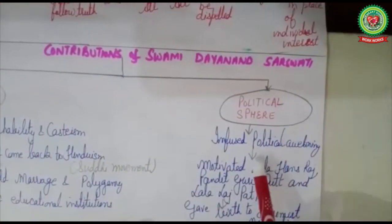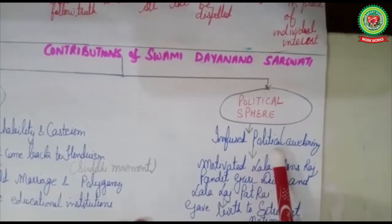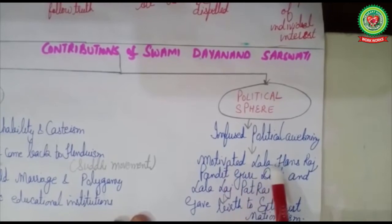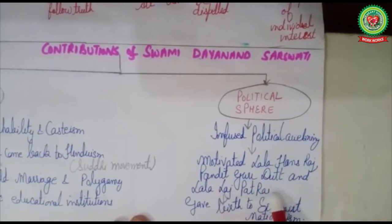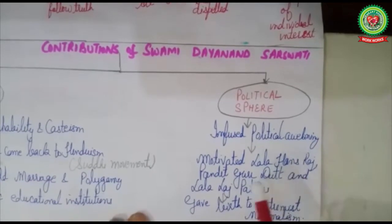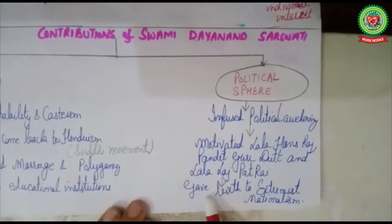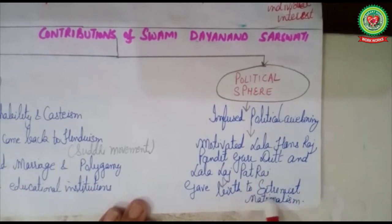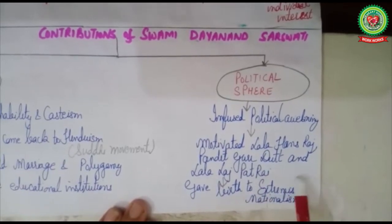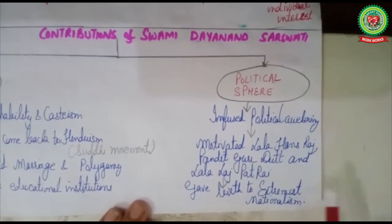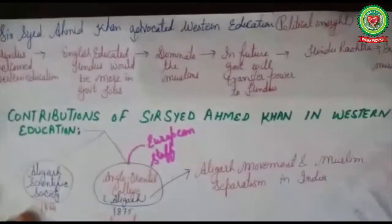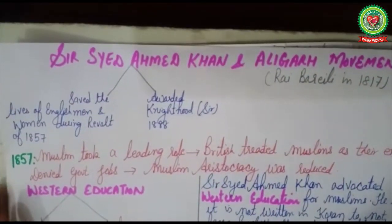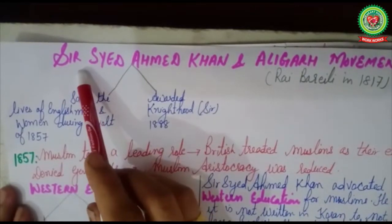In the political sphere, Swami Dayanand Saraswati infused political awakening among the people. He motivated Lala Hans Raj, Pandit Gurudutt, and Lala Lajpat Rai — all freedom fighters. Through Arya Samaj he gave birth to extremist nationalism, a group of freedom fighters who believed in taking up arms against British rule.